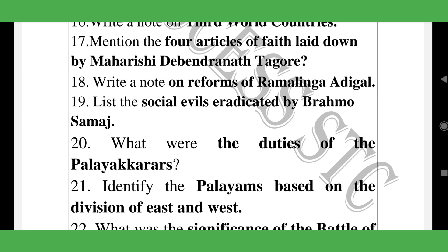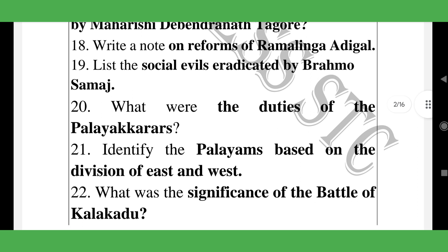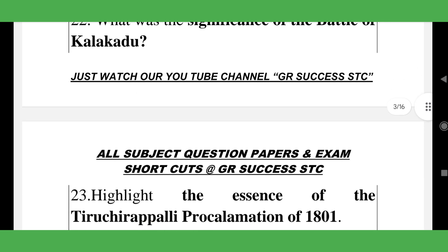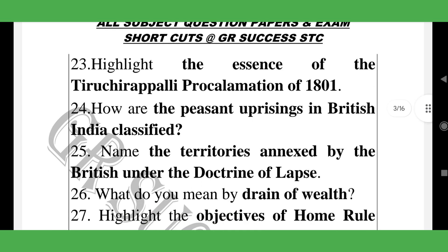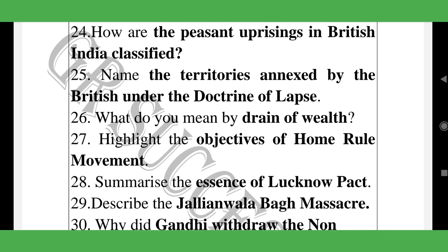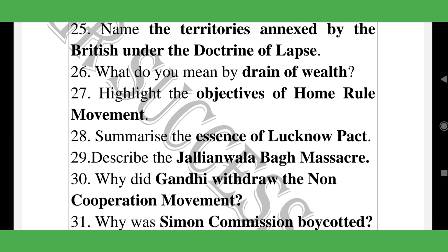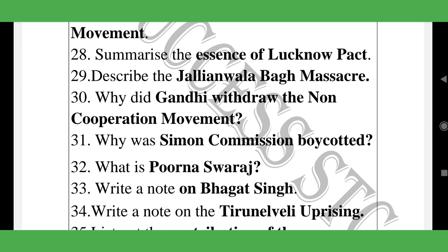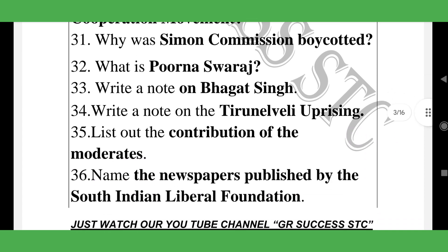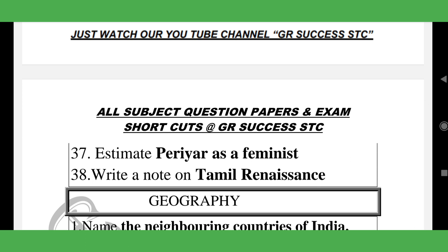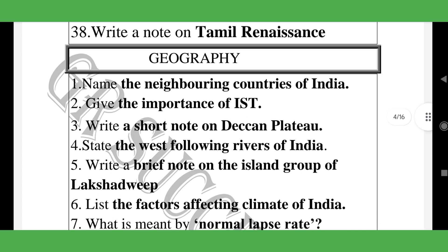Reforms of Ramalingam, division of East and West, significant battles, peasant uprising in British India, territories annexed by the British under the Doctrine of Lapse — a very important two-mark question. Home Rule Movement, Jallianwala Bagh Massacre — most important two-mark in history — Gandhi and the Non-Cooperation Movement, Simon Commission, Poorna Swaraj, Bhagat Singh, contribution of moderates, newspapers published by the South Indian Liberal Foundation, Periyar as a feminist, Tamil — totaling 38 two-mark questions in history.